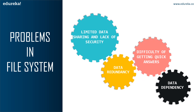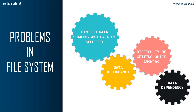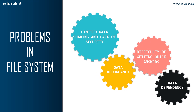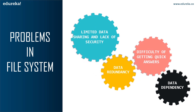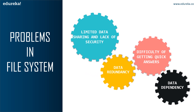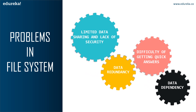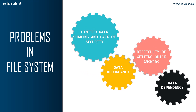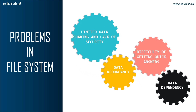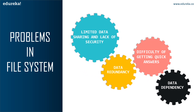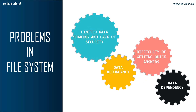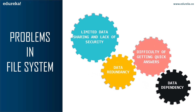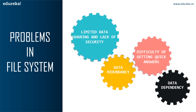The second problem is limited data sharing and lack of security. Data sharing and security are closely related. Sharing data among multiple users introduces a lot of security risk in terms of spreadsheet data and other documents. The built-in file system programs provide only basic security options, but they are not used most of the time because of this negligence. We might face some bigger problems in the near future.